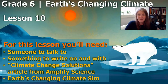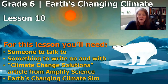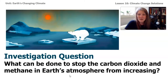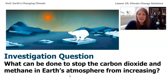For this lesson to be successful, if you have someone to talk to and somewhere to write down your ideas, that will help. We're going to be looking at the Earth's Changing Climate Sim and reading an article called Climate Change Solutions, which we started in lesson nine — we're just going to finish it up. The investigation question we're trying to answer is: what can be done to stop the carbon dioxide and methane in Earth's atmosphere from increasing?